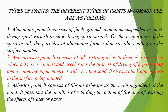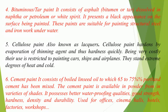3. Asbestos paint: It consists of fibrous asbestos as the main ingredient. It possesses the qualities of retarding the action of fire and resisting the effects of water or gases. 4. Bituminous/tar paint: It consists of asphalt, bitumen or tar dissolved in naphtha, petroleum or white spirit. It presents a black appearance and is suitable for painting structural steel and iron work under water. 5. Cellulose paint, also known as lacquers: Cellulose paint hardens by evaporation of the thinning agent and thus hardens quickly. Being very costly, their use is restricted to painting cars, ships, and airplanes. They stand extreme degrees of heat and cold.